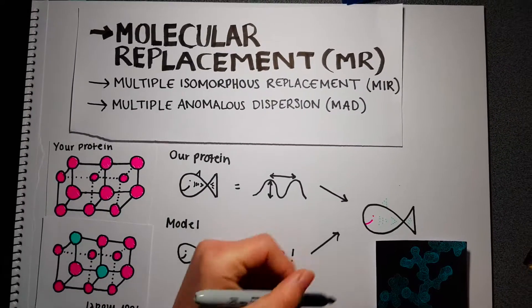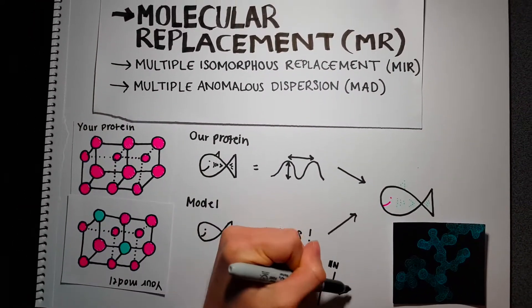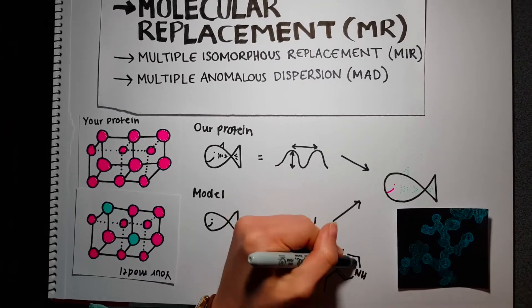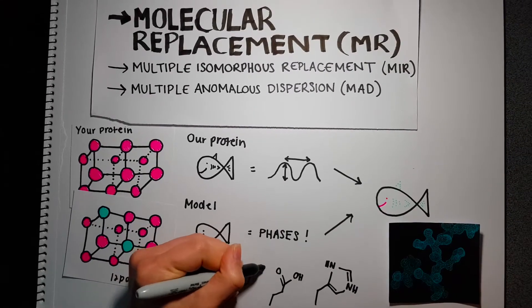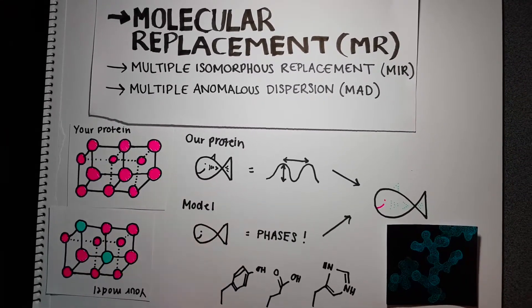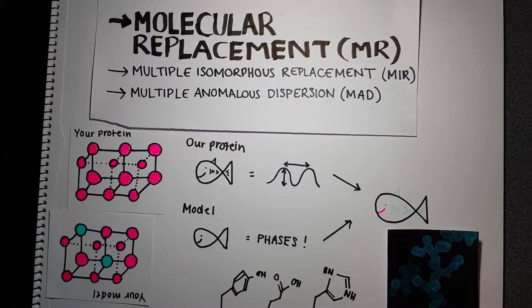This produces an electron density map. From this map, you can make refinements such as adding amino acid side chains. By making adjustments, you create a new model with phases more accurate than those from the first model.